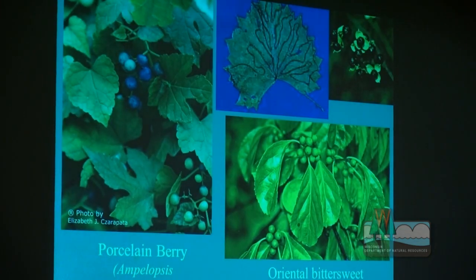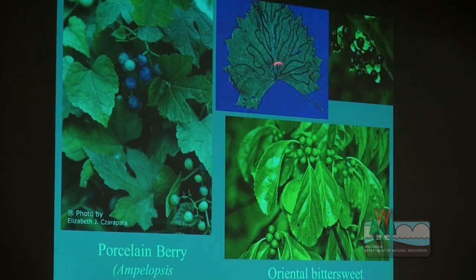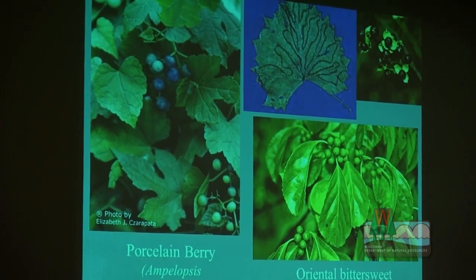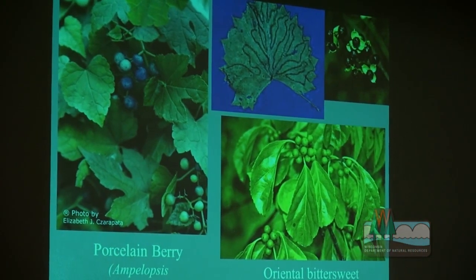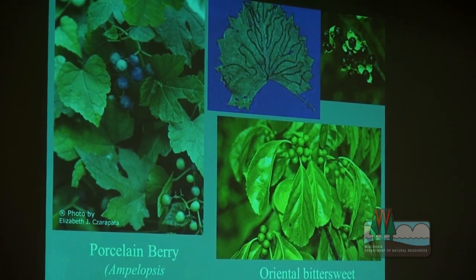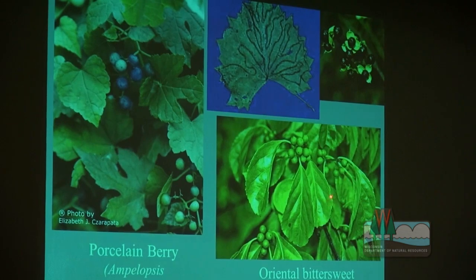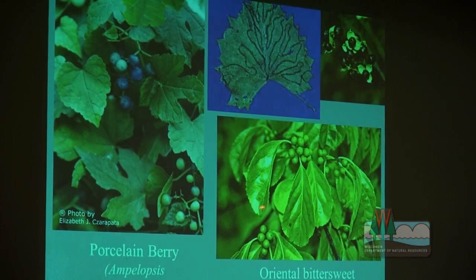If you look at related native and non-native species, you see the same kind of difference. Native grape vines, while they can be a pain climbing up trees, at least have lots of different insects and diseases that affect them, so they don't completely take over. However, porcelain berry — related to grapes — doesn't have those same limiting factors and doesn't have that natural brake on its system. The same is true with bittersweet: the non-native oriental bittersweet rarely has anything chewing on its leaves, as opposed to the native American bittersweet, which is now pretty uncommon.